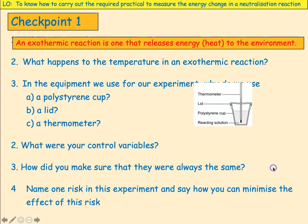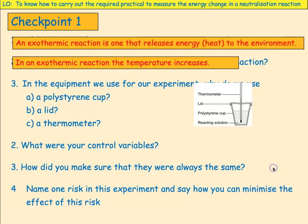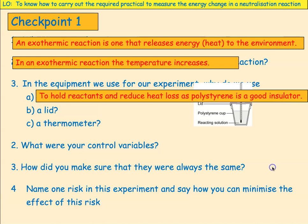What is an exothermic reaction? An exothermic reaction is one that releases heat energy to the environment. What happens to the temperature in an exothermic reaction? The temperature increases. Why did we use a polystyrene cup? To hold the reactants and reduce heat loss, as polystyrene is a good insulator.